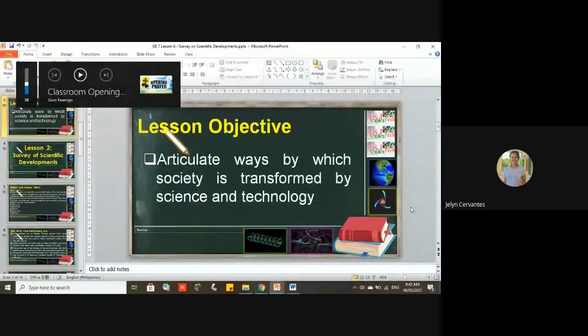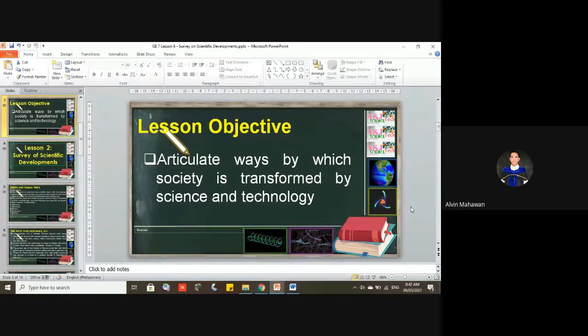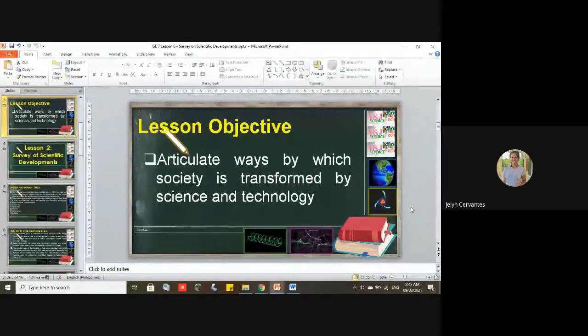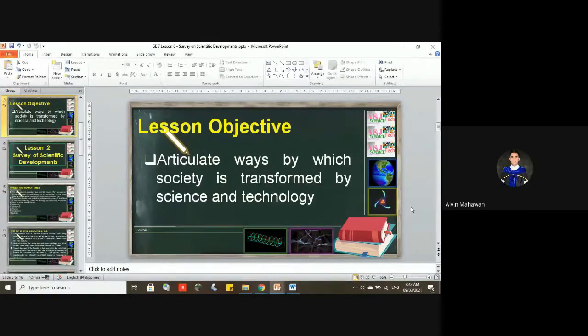Student responds: For me, articulate ways is the ways in how society is being transformed by science and technology. Instructor: Perhaps, thank you for your idea. Perhaps it's the matter of how we weigh or how we balance things. Is that correct, Jeline? Yes. Okay, thank you very much. What else?